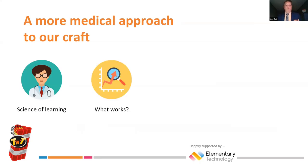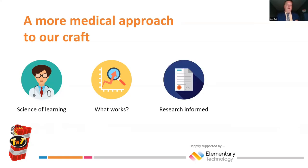We need to understand what works because our students have one chance at education. It's important to make sure our practice is research-informed — not research-led, and not dictated by research, but research-informed. What I mean is that we use research to increase our knowledge around a situation, combined with our gut reactions and contextual knowledge of our schools, to make sound decisions as classroom teachers and leaders, rather than just being led by research.